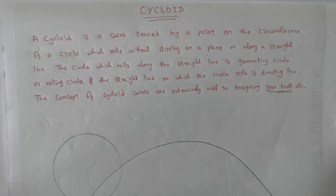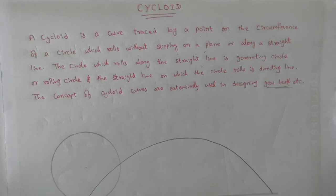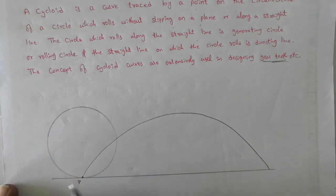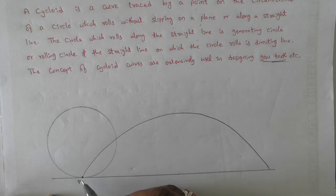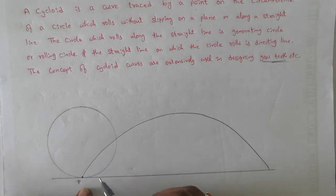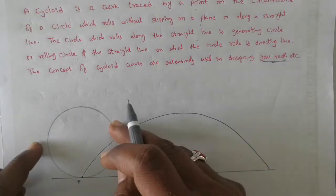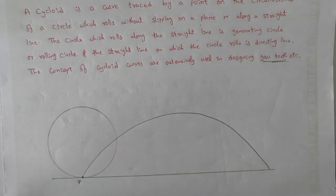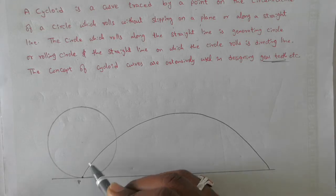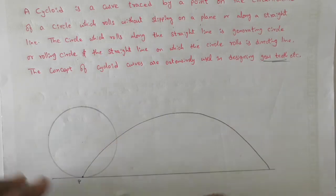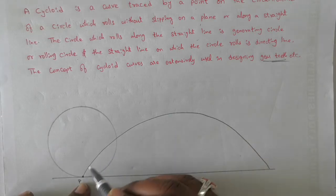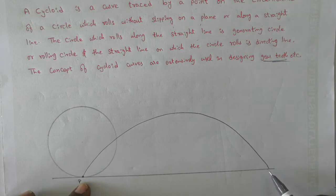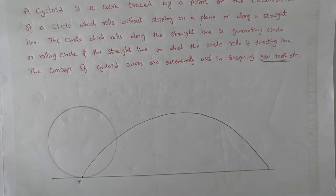In this video, our topic is cycloid. Imagine a circle rolling on a plane or straight line. There is a point P on the circumference of the circle. As the circle rolls without slipping, point P traces a path. That path is called a cycloid curve or cycloidal curve.